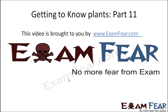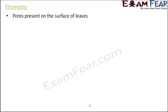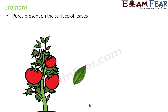Hello friends. This video on getting to know plants part 11 is brought to you by examfear.com — no more fear from exams. Let's know a little more about stomata. These are very tiny pores which are present on the surface of leaves. Even if you look very carefully at a plant's leaf, you will not be able to see stomata because they are very very small. They are visible only under microscopes.